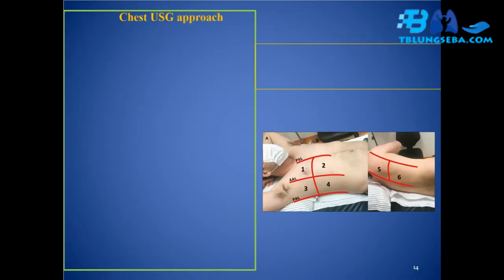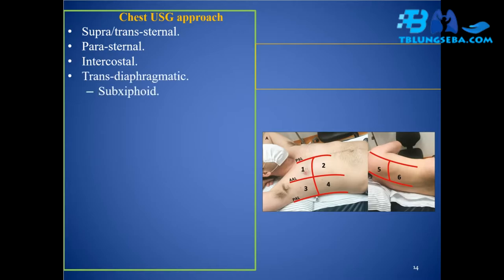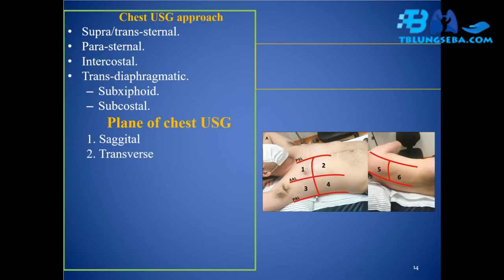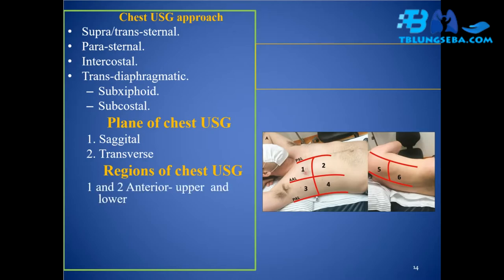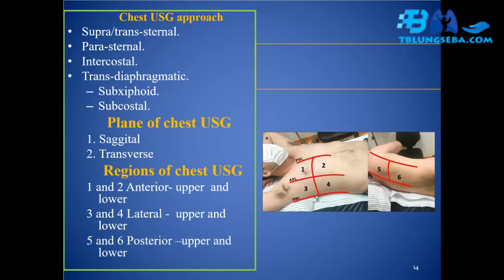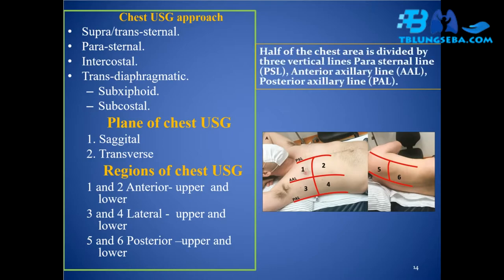Chest USG approach: supra-sternal, trans-sternal, parasternal, intercostal, trans-diaphragmatic, subcosmic, subxiphoid, and subcostal. Planes of chest USG: (1) sagittal, (2) transverse. Regions of chest USG: (1 & 2) anterior upper and lower, (3 & 4) lateral upper and lower, (5 & 6) posterior upper and lower. Half of the chest area is divided by three vertical lines: parasternal line (PSL), anterior axillary line (AAL), and posterior axillary line (PAL).